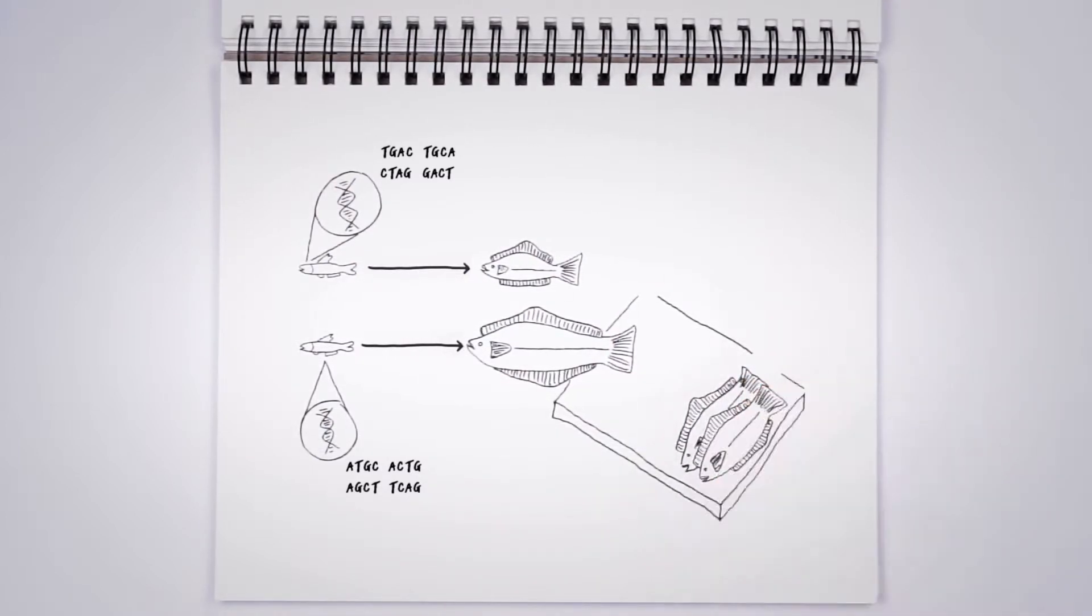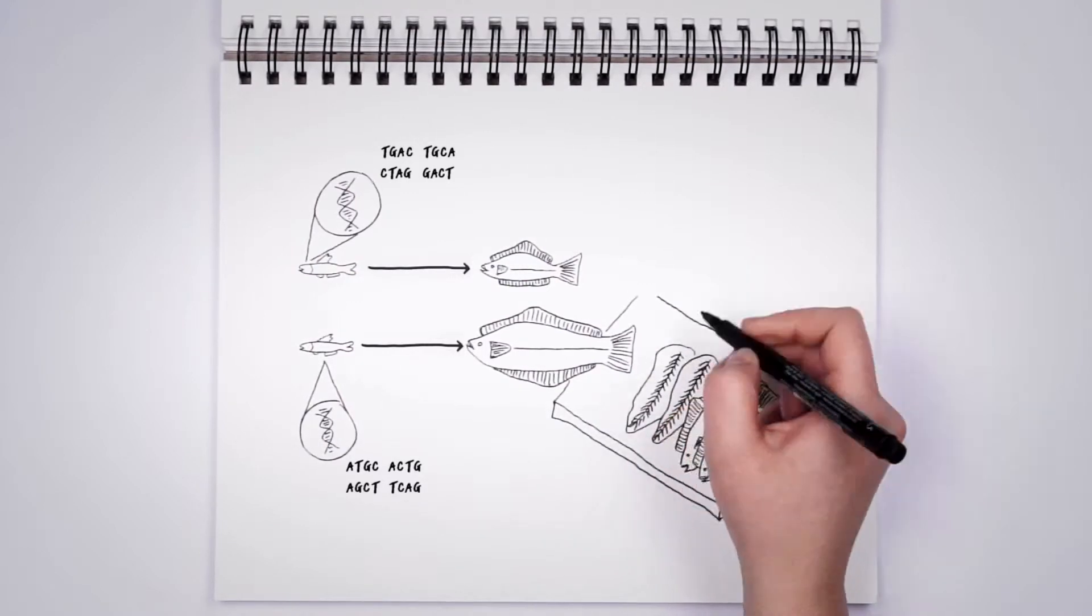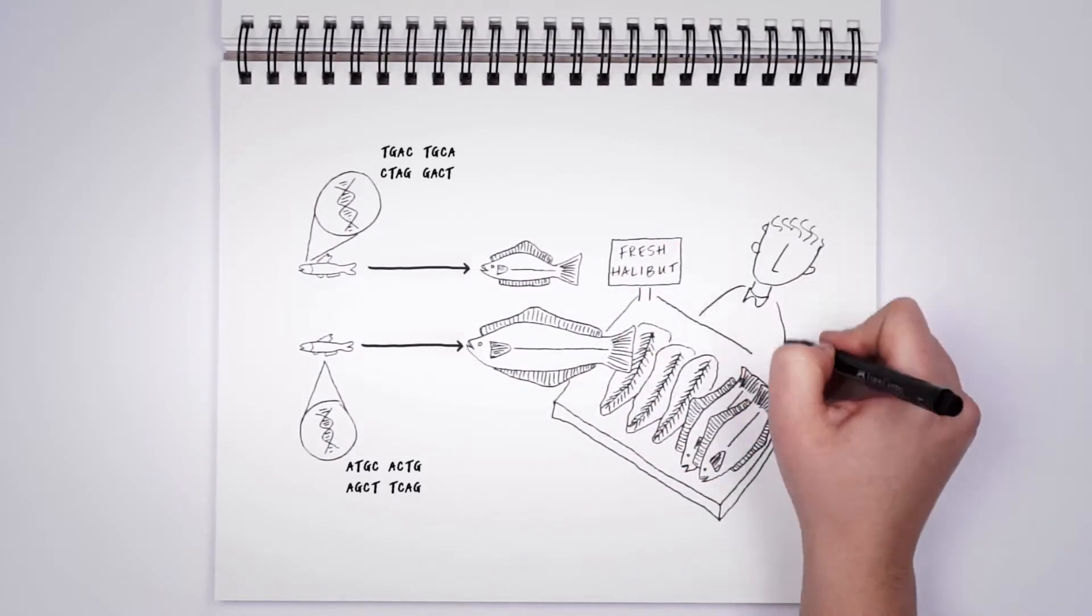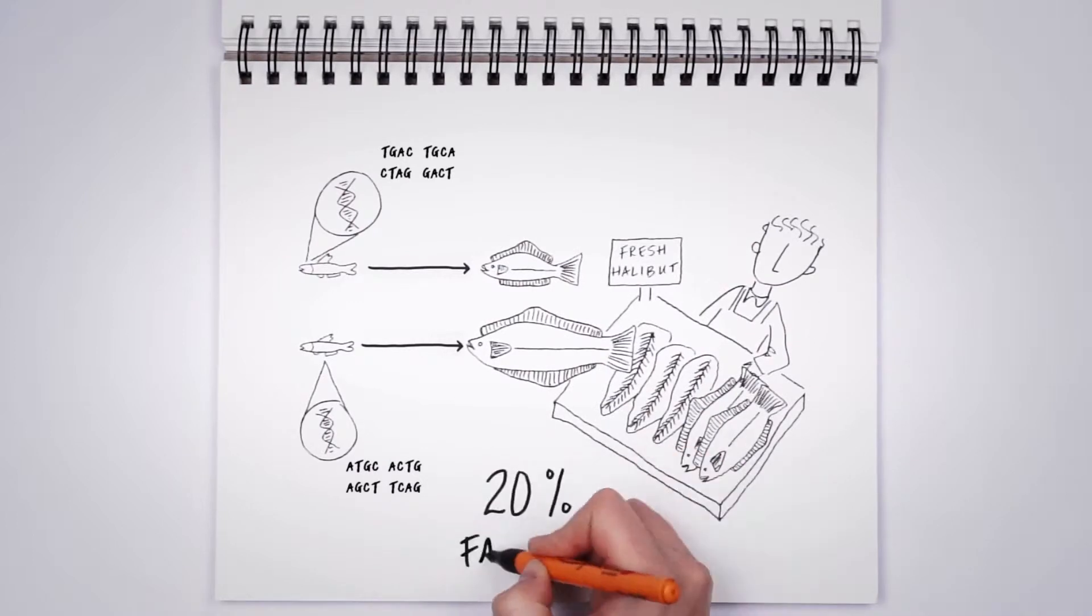For example, genomics helped halibut producers select fish that naturally grow more quickly, helping them get their product to market 20% faster.